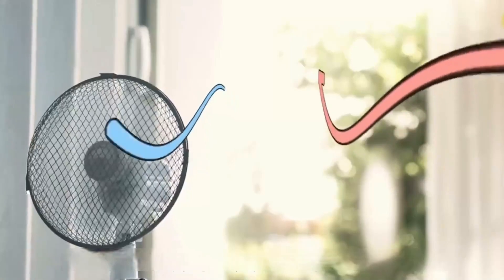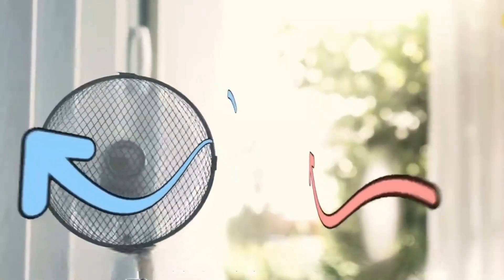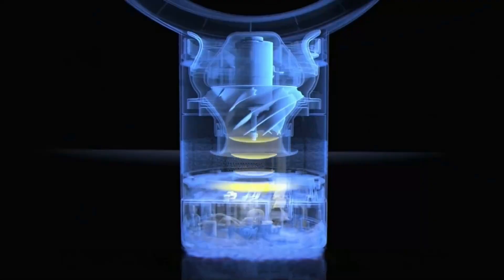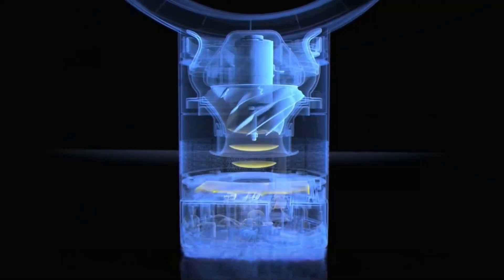In fact, a bladeless fan does not really have no blades. Its blades are hidden in the bottom of the fan. The air is blown out from the gaps around the fan, that is, the small hole at the bottom where air is sucked in.